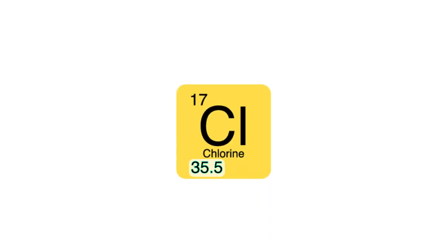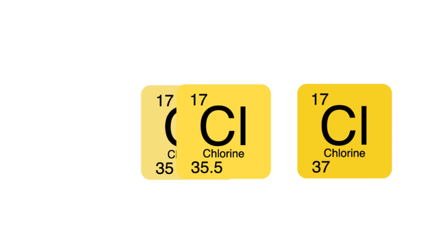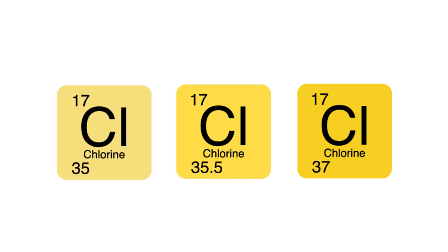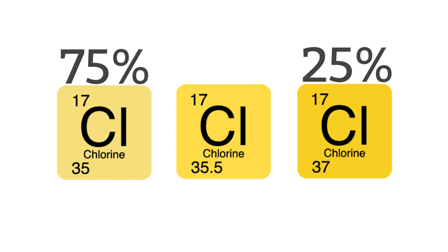There are two common isotopes of chlorine: chlorine 37 and chlorine 35. Chlorine 35 is three times as common as chlorine 37, so the average weight is three quarters times 35 plus one quarter times 37, which gives 35.5.